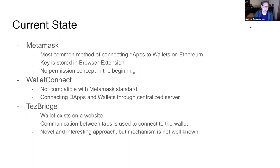Currently, MetaMask is the way to go if you're on Ethereum. It works pretty well and has been around for a couple of years. The key lives in the browser extension, so if you have a mobile wallet and want to work with it, you have to transfer your funds to the Chrome extension and then work with it there. There was also no permission concept in the beginning, which caused a migration period. There is also the WalletConnect project, which is another standard that allows you to connect to mobile wallets directly from your DAPs, but it uses a separate standard, is not out-of-the-box compatible with MetaMask, and the connection goes through a centralized server.